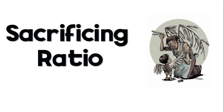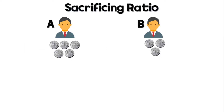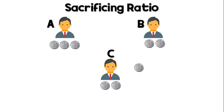Sacrificing ratio — let's look at a simple example. A and B are partners sharing profit in the ratio 5:3. A new partner C is admitted. We need to find the sacrificing ratio.